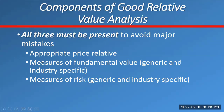So you need to have some price relative. You need to make sure you're comparing that to some fundamental value and some risk value. Price to earnings only has two things — the price of the stock and earnings. Earnings is a fundamental value, but there's nothing on risk. You may find a stock that has a really low price to earnings, think it's a cheap stock, and not realize that company has a large amount of debt.